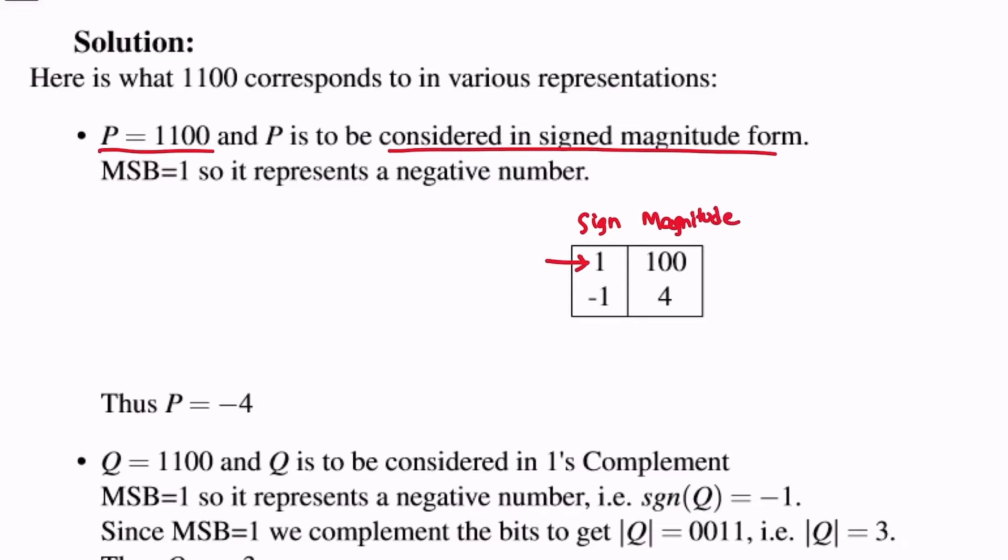So 1 is the sign bit and the sign bit being 1 means that it represents a negative number, and the magnitude is 100 which means it is 4, so P is equal to minus 4.